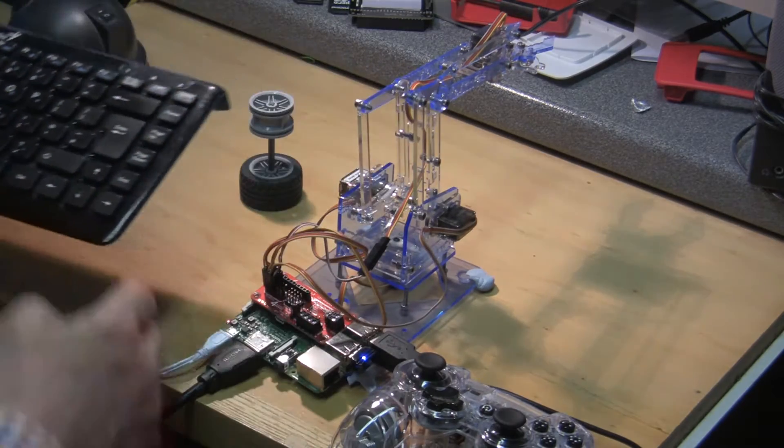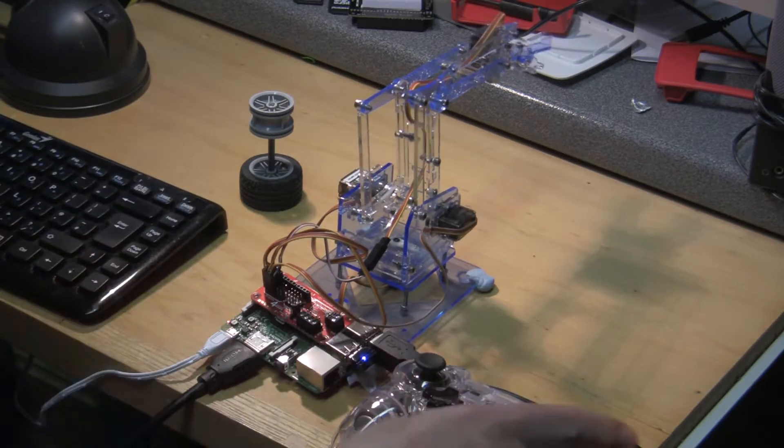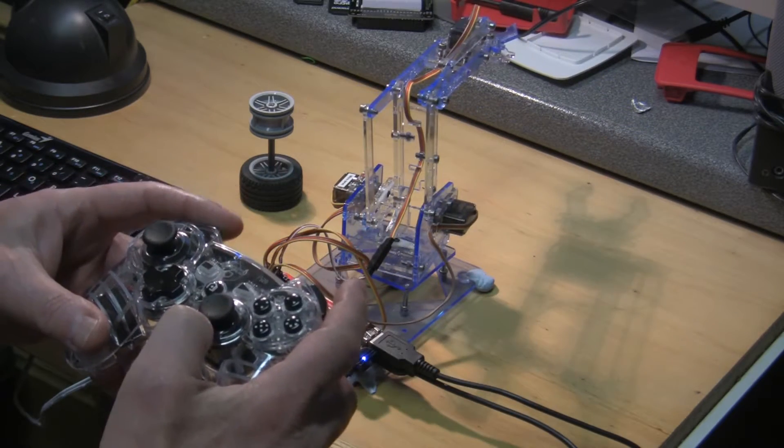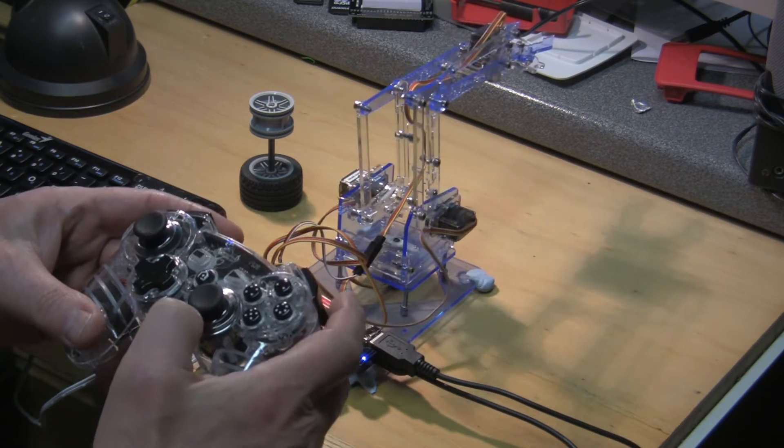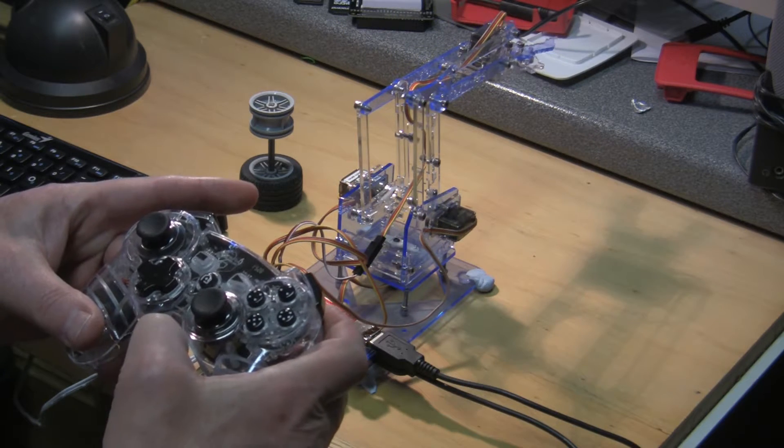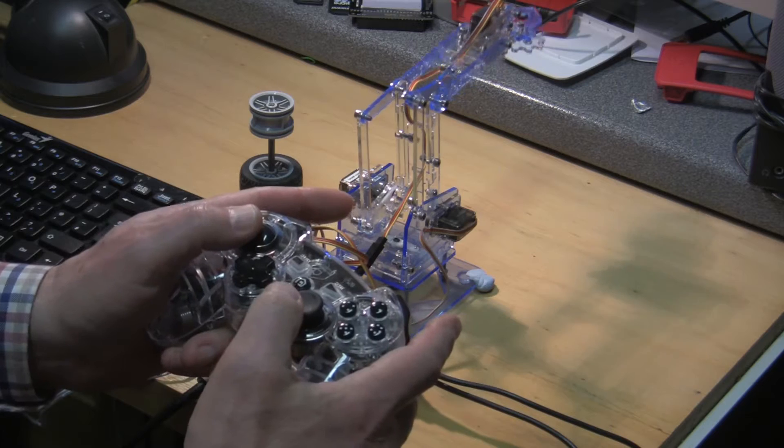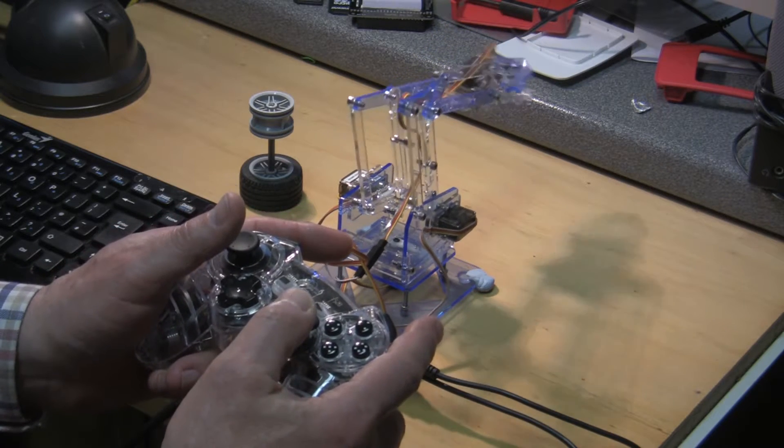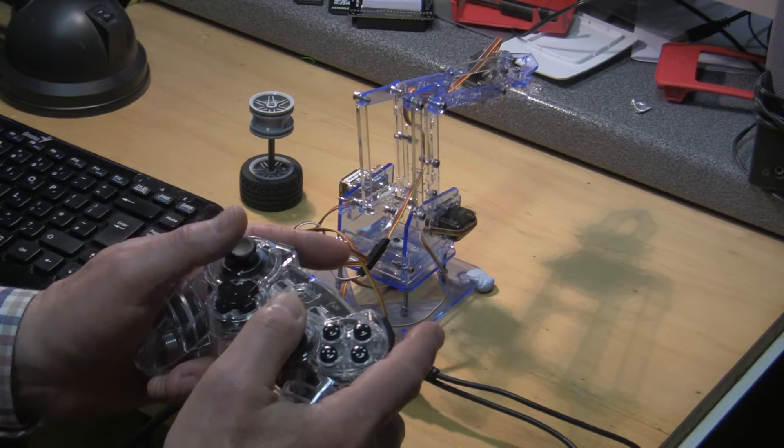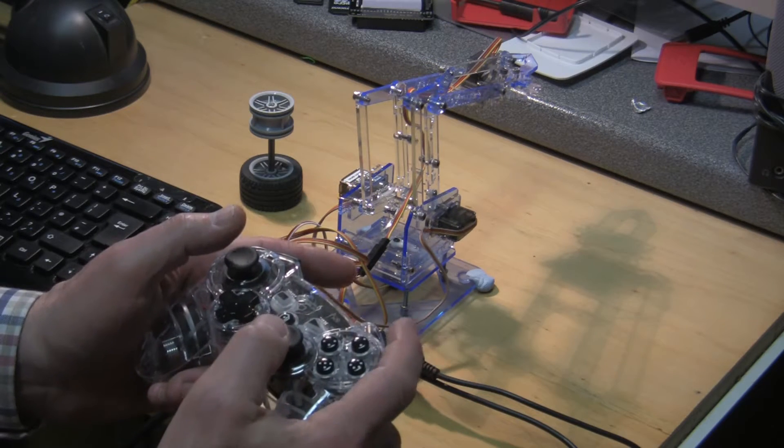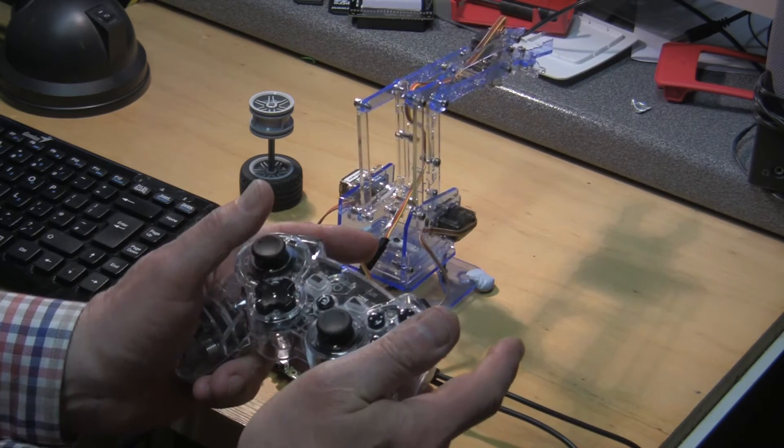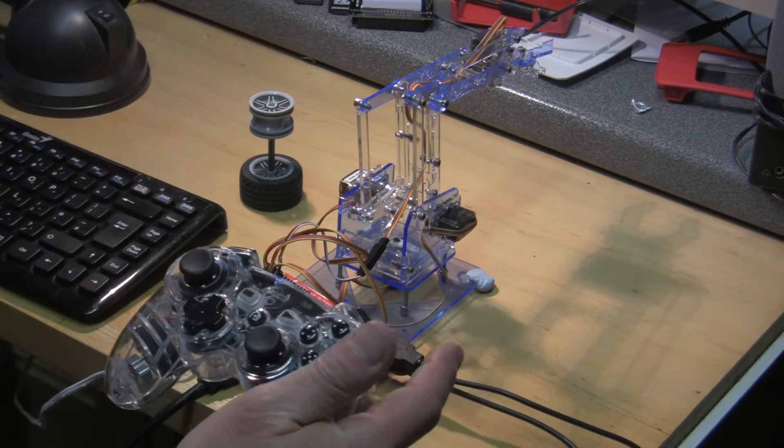We can see that we can move the arm around as before, panning left and right, opening and closing the grip, raising the top arm and raising and lowering the bottom arm. Just to remind you, if I press the left hand button there it will reset the arm to its starting position.